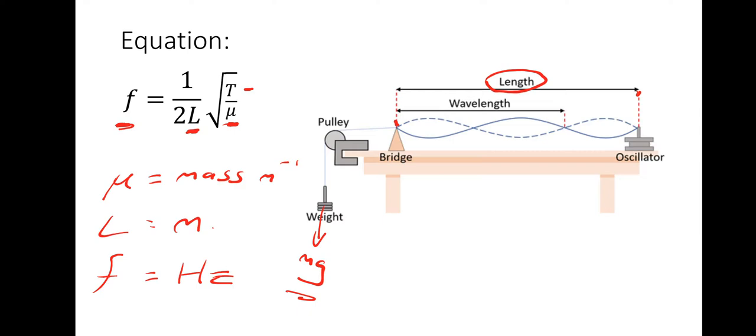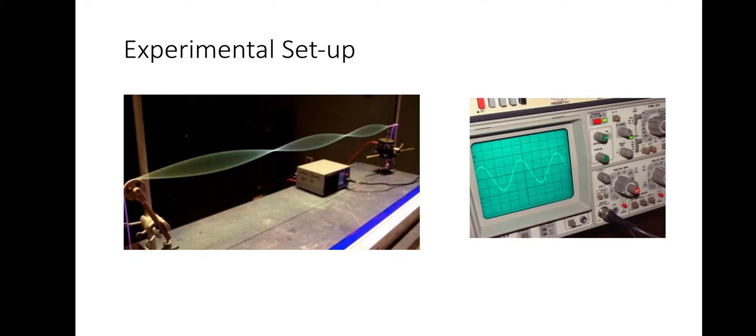But it's a standing wave set up. You're looking at the first harmonic or the fundamental frequency. We've got tension, mass per unit length. And we also need to know the length between the bridge and the oscillator. So the masses and the weight for the tension is very easy. It's just mg. So the question might be, well, how do we measure the frequency?